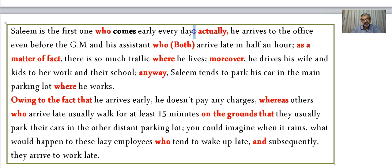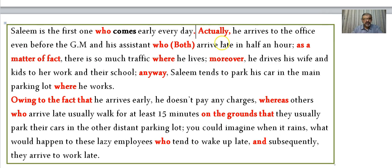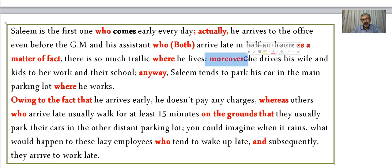Notice the punctuation: I use a semicolon before a small-letter continuation, and a period before a capital letter. 'Actually, he arrives to the office even before the GM and his assistant, who both arrive late by half an hour. As a matter of fact, there is so much traffic where he lives.' 'Moreover' — an addition transition — 'he drives his wife and kids to her work and their school.'